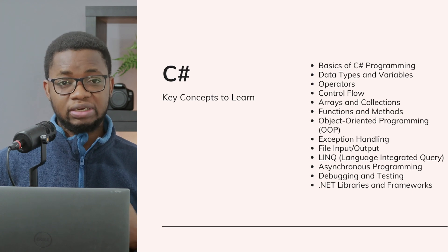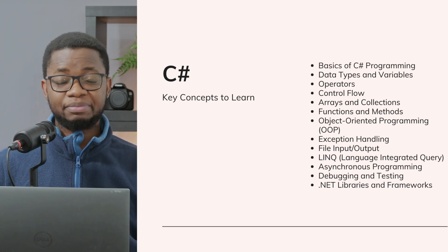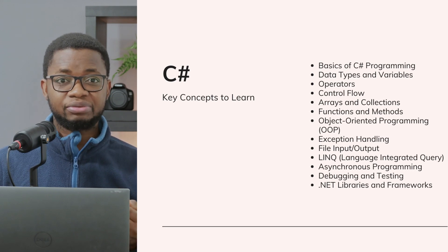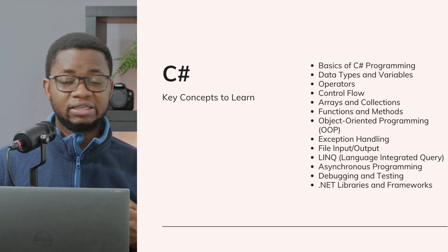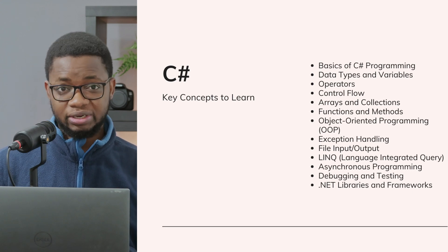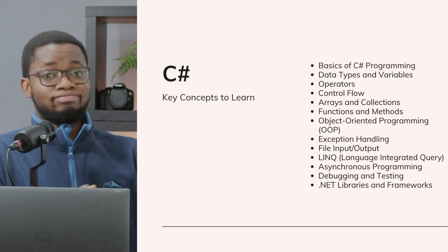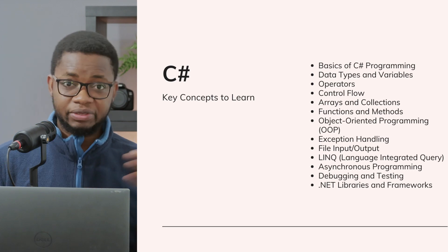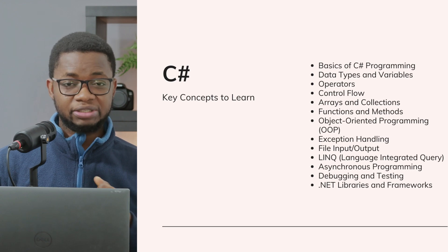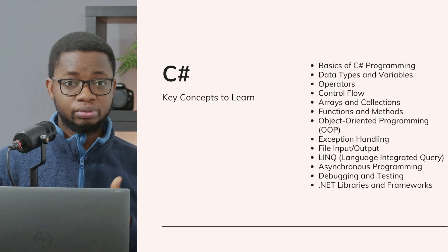After writing your first Hello World application, the next thing to learn is data types and variables. You'll understand primitive data types like int, float, and string, and learn how to declare and initialize variables for your program. After data types, you need to get familiar with operators — arithmetic, relational, logical, and assignment operators in programming.